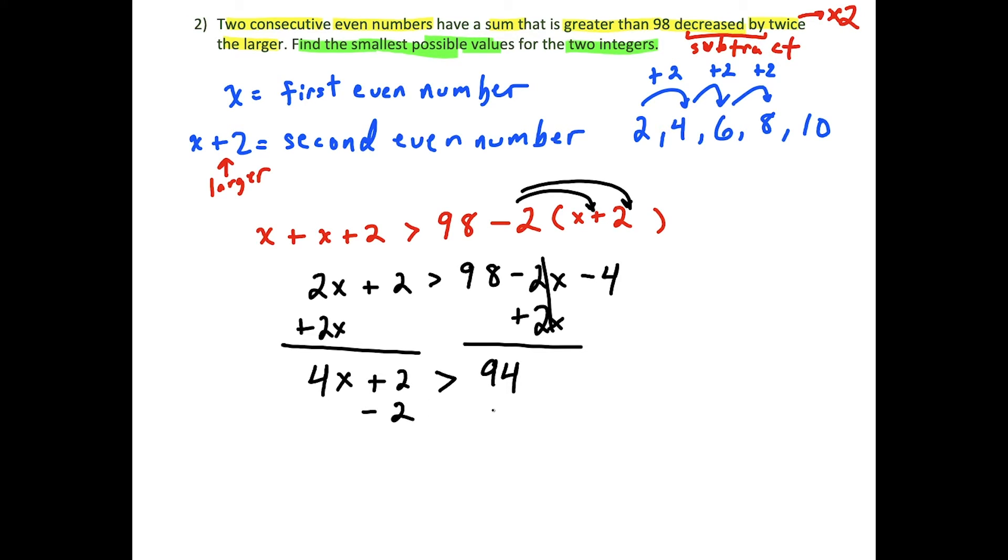The next thing we want to do is subtract two on both sides. We've got 4x is greater than 92. Once we solve for x here, we'll write the result over here, that x is greater than 92 divided by 4, which is 23. Now you might be looking at this and saying, wait a minute, x is supposed to be even. But let's think very carefully about this.